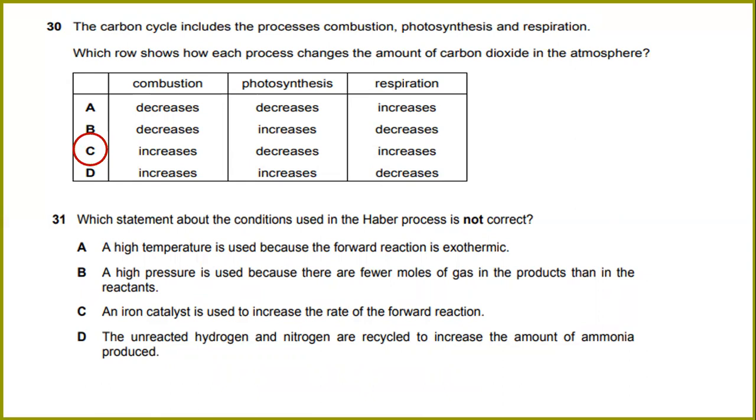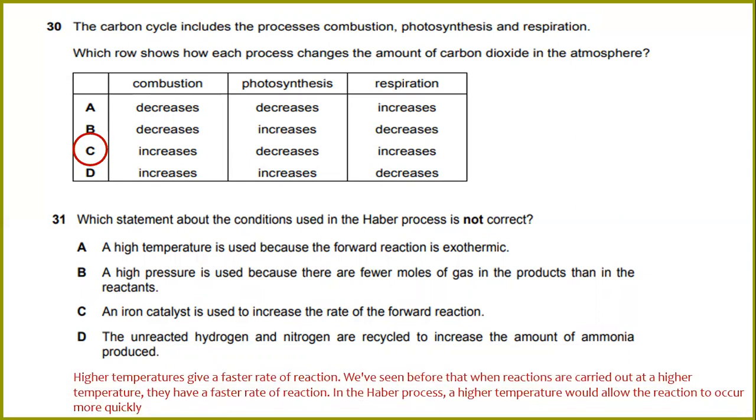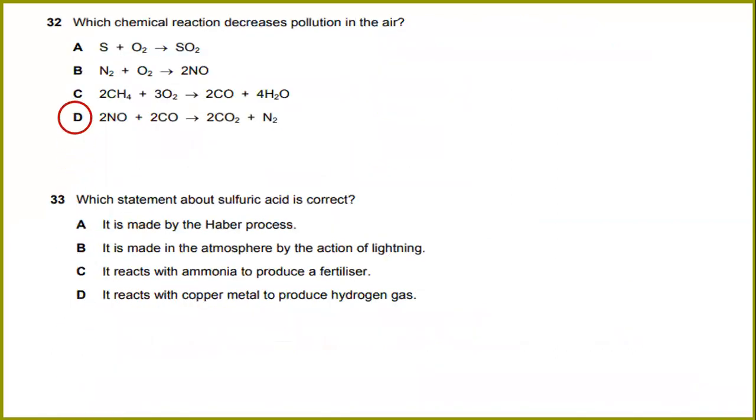Which statement about the conditions used in the Haber process is not correct? Higher temperature gives a faster rate of reaction. We have seen before that when reactions are carried out at a higher temperature, they have a faster rate of reaction. In the Haber process, a higher temperature would allow the reactions to occur more quickly. So the answer would be A: higher temperature is used because the forward reaction is exothermic.